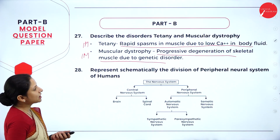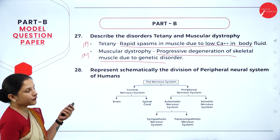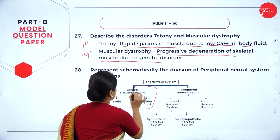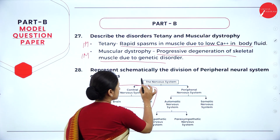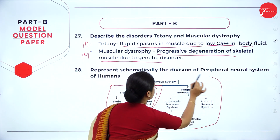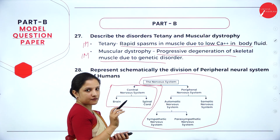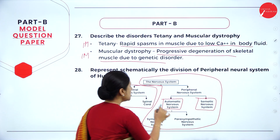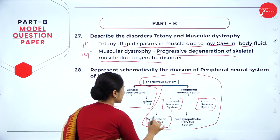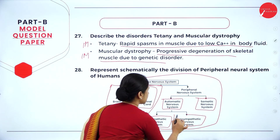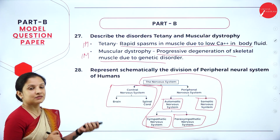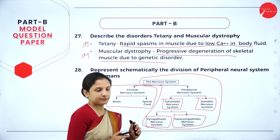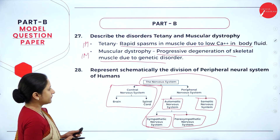Question 8: represent schematically the division of the peripheral nervous system of humans. The peripheral nervous system is divided into the autonomic nervous system and the somatic nervous system. The autonomic nervous system is further divided into the sympathetic nervous system and the parasympathetic nervous system. This schematic flow chart representation earns 2 marks.